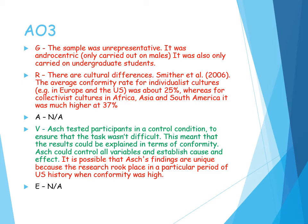Because it's a study we're going to use the acronym GRAVE. Can we generalise it? The sample is unrepresentative and it lacks population validity. It was androcentric — only carried out on 123 males. They were also undergraduate students, so are they representative of the whole population? It's also ethnocentric because it was carried out in America — would the same findings apply to other countries? Would women conform the same as men? Applying a study carried out on one gender to the other and assuming no difference would be beta bias, so this study is beta biased.